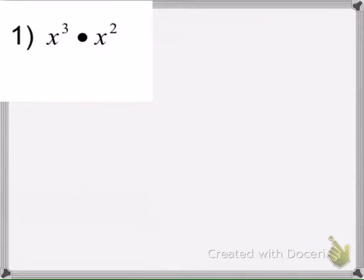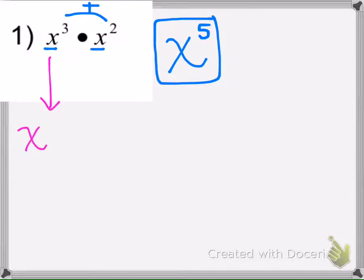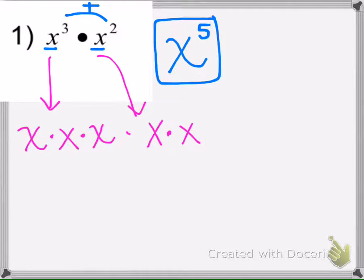We're going to go through 9 examples using the product rule. After you get the hang of it, pause the video, try it yourself, and then push play. For example 1, if the base is the same — which it is — keep it the same and add the exponents. If you get stuck, think about what it looks like written out the long way, and you'll see that's 5 of them, so we add.